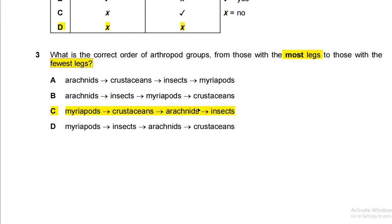Not all spiders have four pairs of legs — some may have more or fewer — but crustaceans have more than arachnids. Insects like ants have six legs. The animal kingdom classification chapter is difficult to remember because there are many categories with distinct features. This type of question asking from most to fewest legs is relatively new in this format and requires careful memorization.